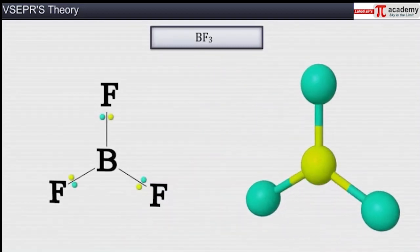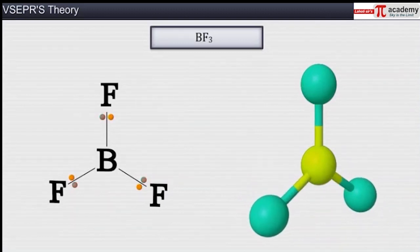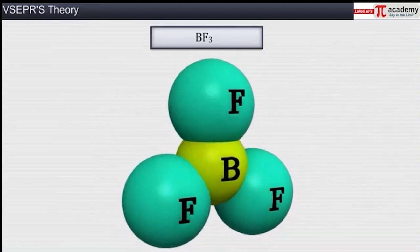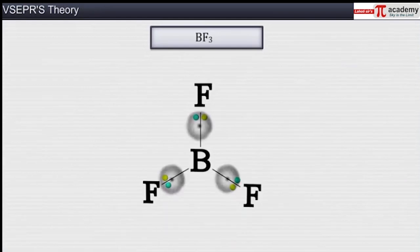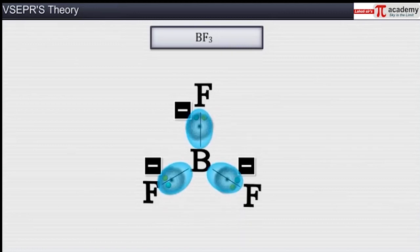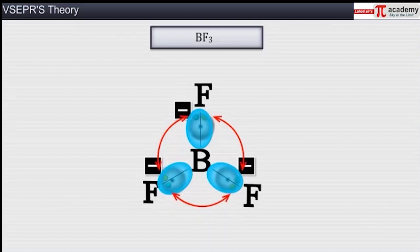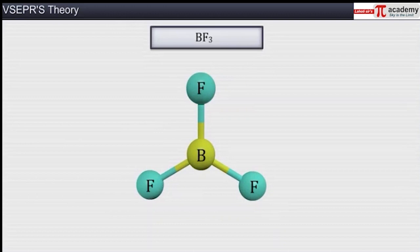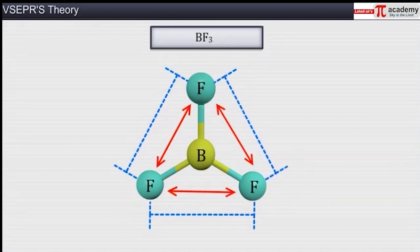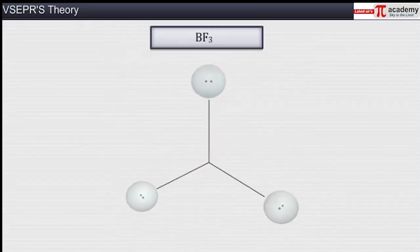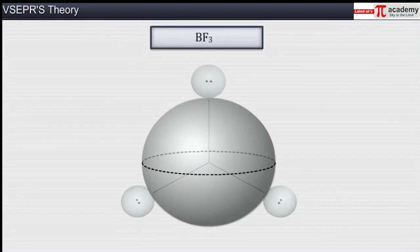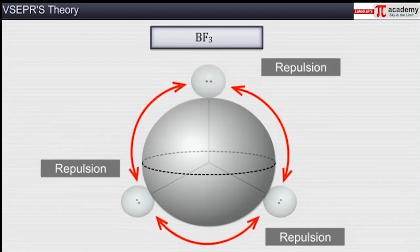Molecules in which the central atom is surrounded by only bond pairs possess a definite geometry, as in the case of BF3. Since each electron pair is a negatively charged cloud, the bonded atoms move apart to minimize repulsions between the electron pairs. To minimize repulsion, the distance between the atoms must be maximum. To attain this maximum distance, imagine the valence shell as a sphere with electron pairs located on its surface at maximum distance from each other.